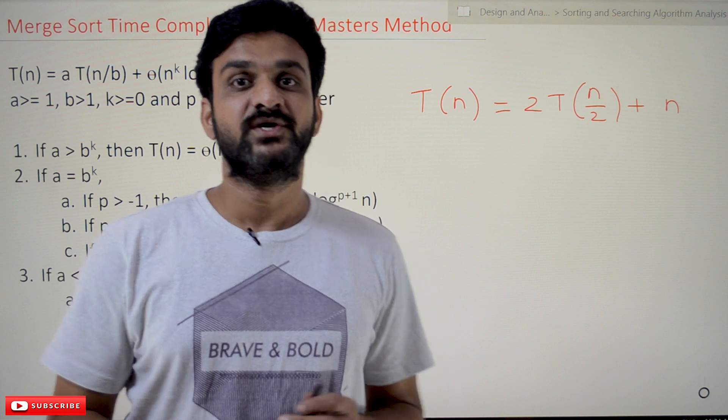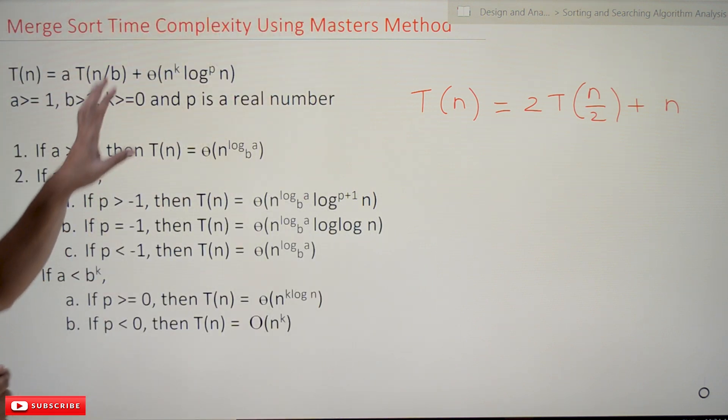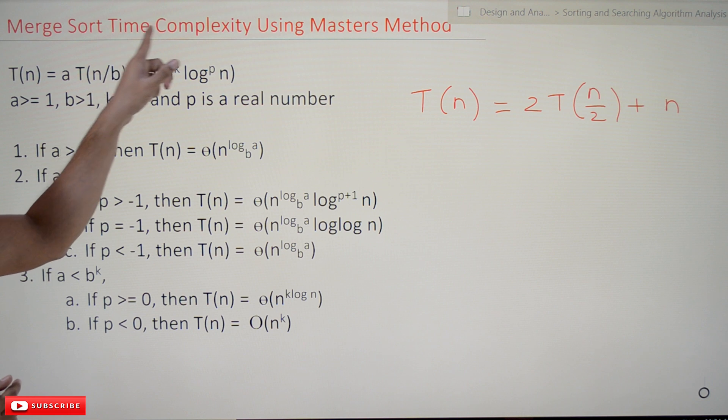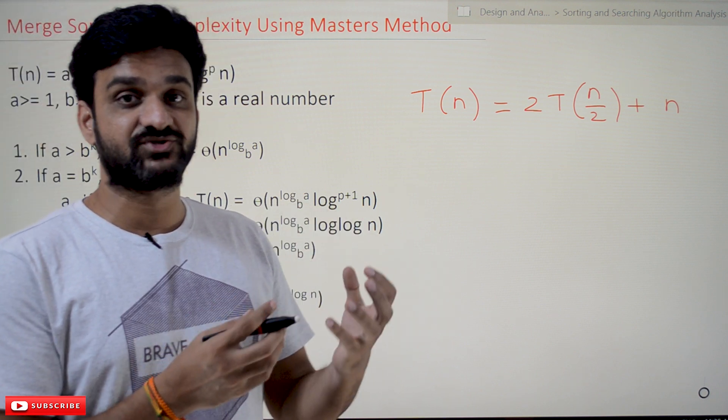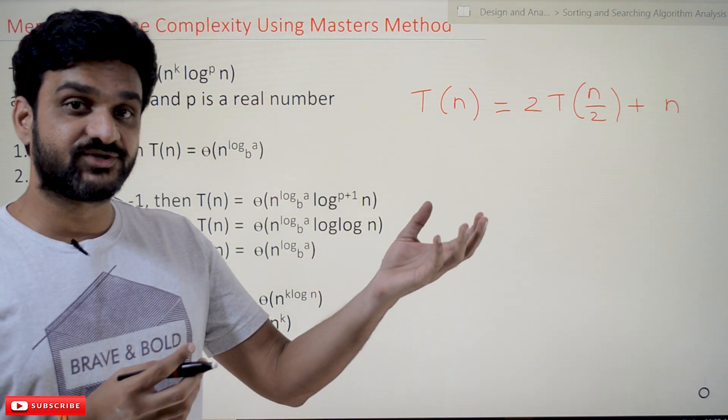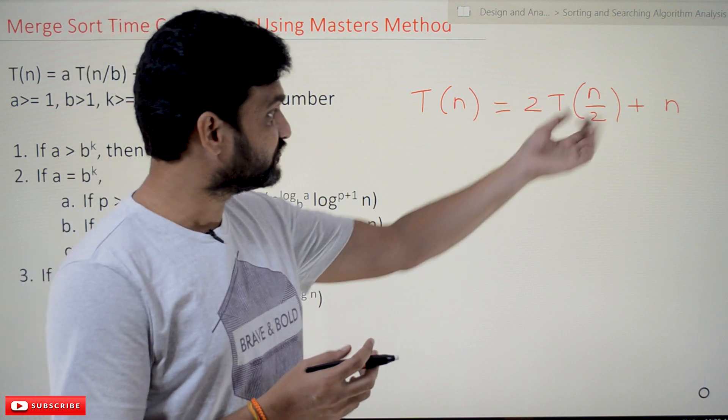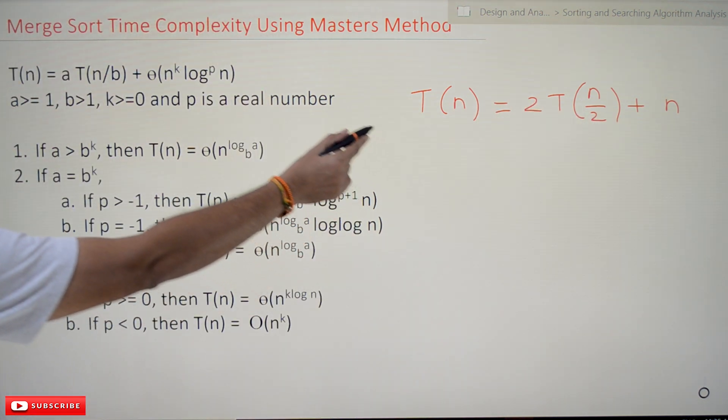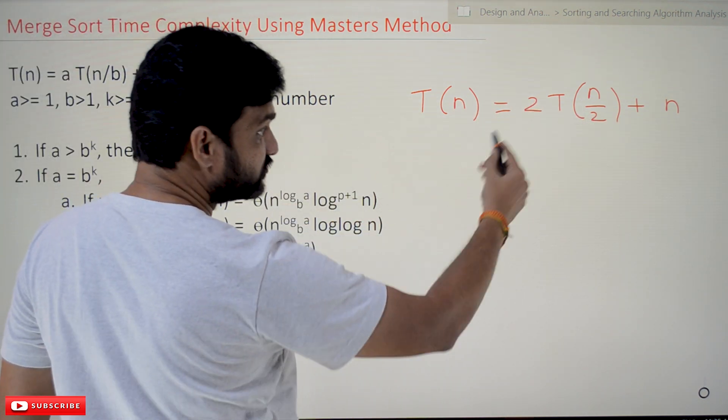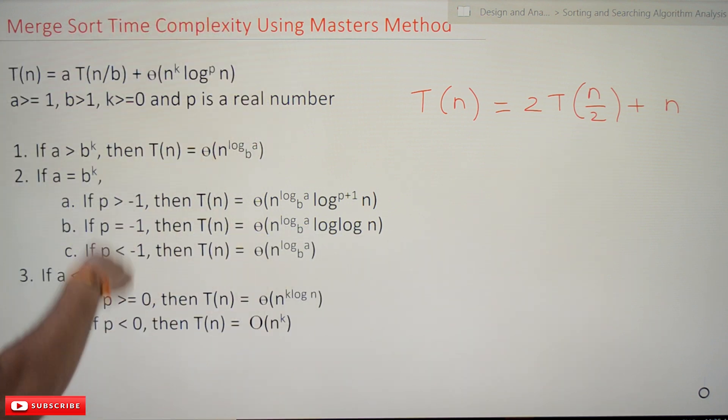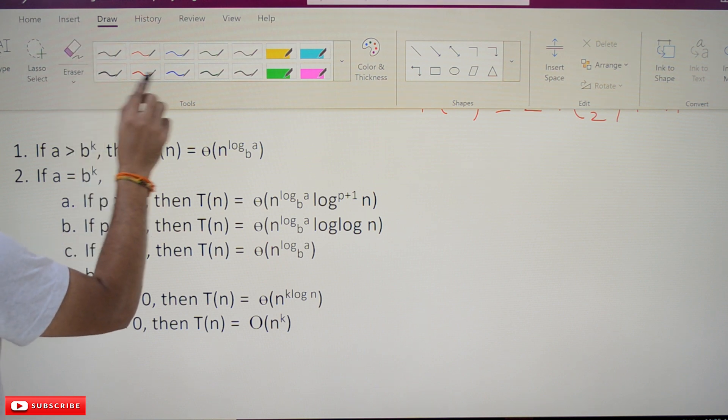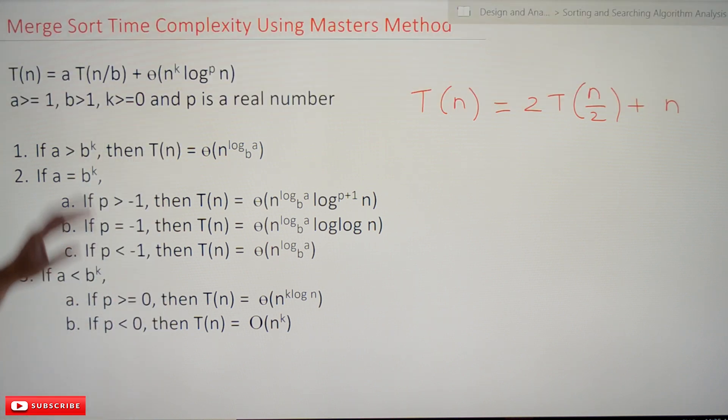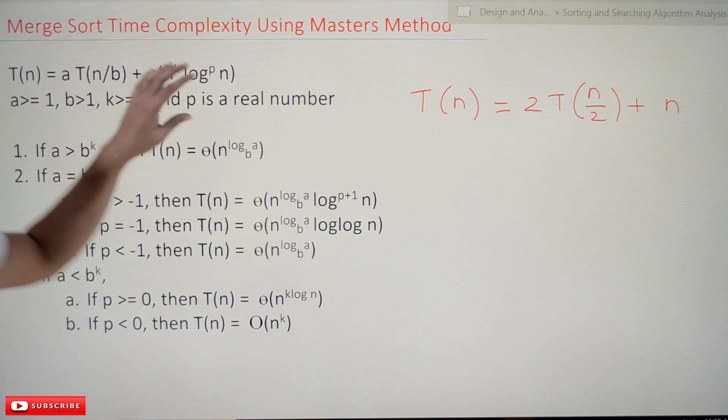Now coming to this class, we'll try to solve this—find the merge sort time complexity by using Master's method. It is one of the methods where recurrence relations can be solved. Merge sort is a recursive algorithm, so the recurrence relation for merge sort is T(n) = 2T(n/2) + n. How this recurrence relation has been derived was already explained in our previous video.